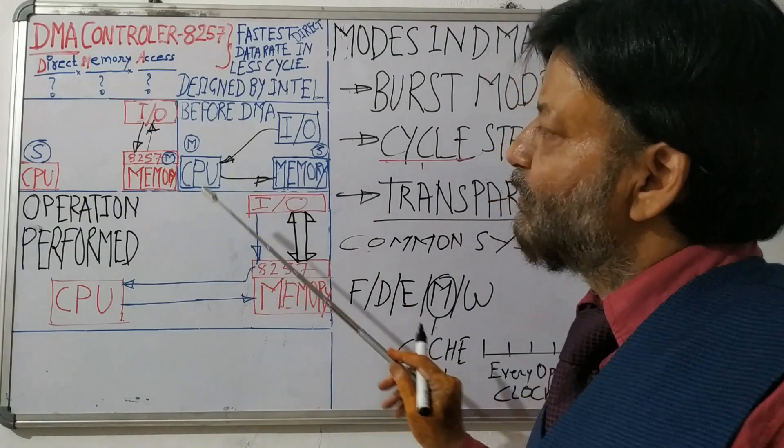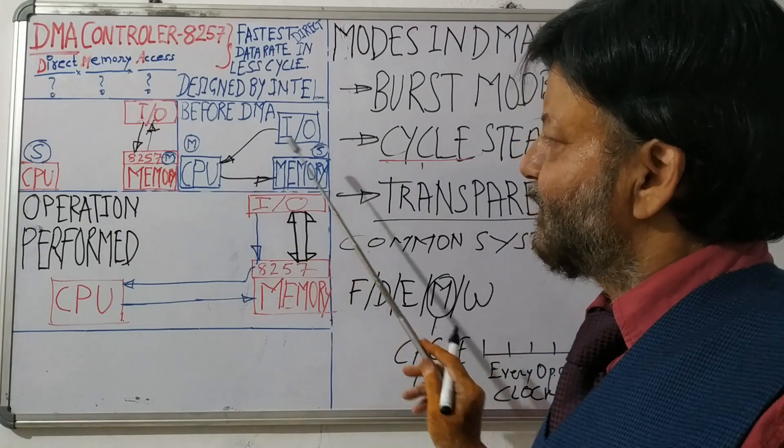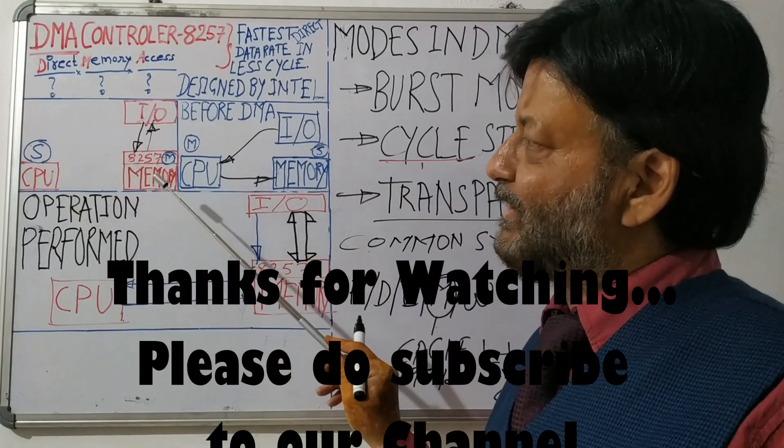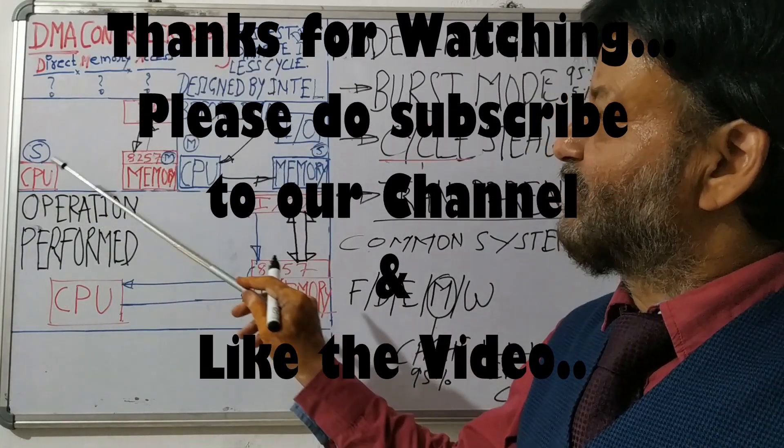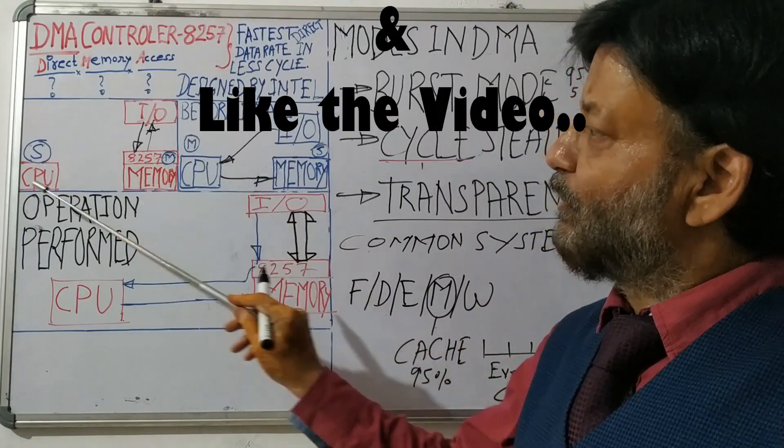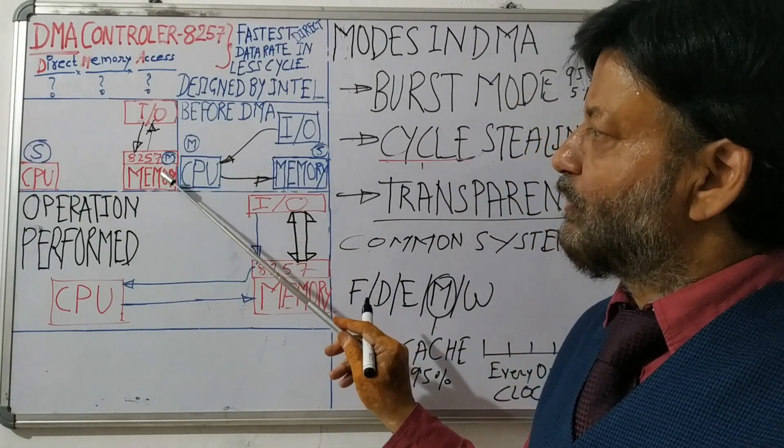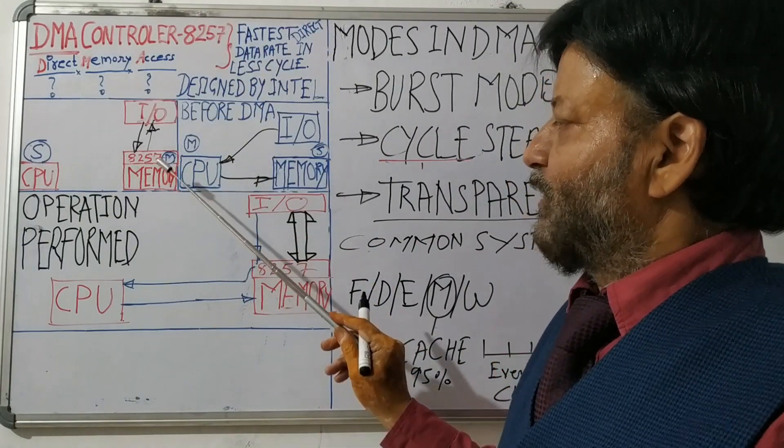Now here what is happening? Here the master and slave concepts are reversed. How it can be reversed? Now CPU will no more master. Now CPU is slave and your memory is master or the DMA is master.